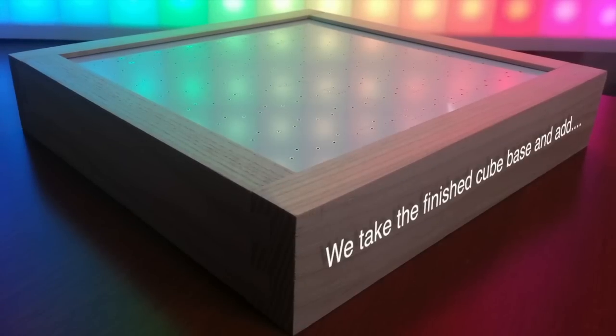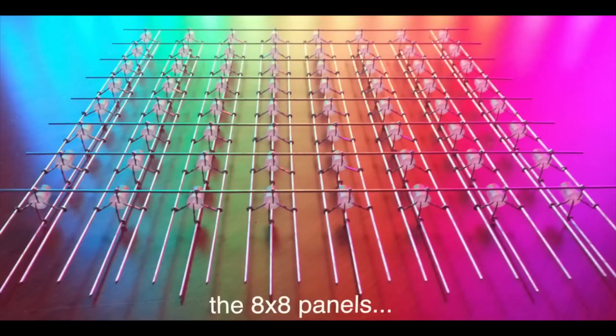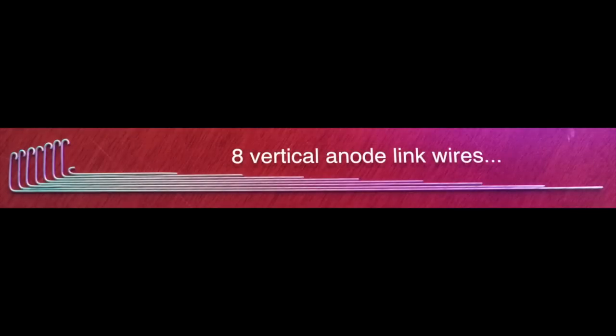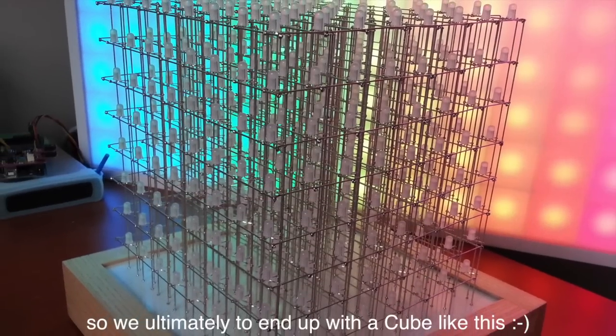I will take the base that I made in the previous video, add the 8x8 RGB LED panels, 16 horizontal anode link wires, and 8 vertical anode link wires that I'll show you how to make in this video. I'll put them all together so that we ultimately end up with a cube that looks like this.